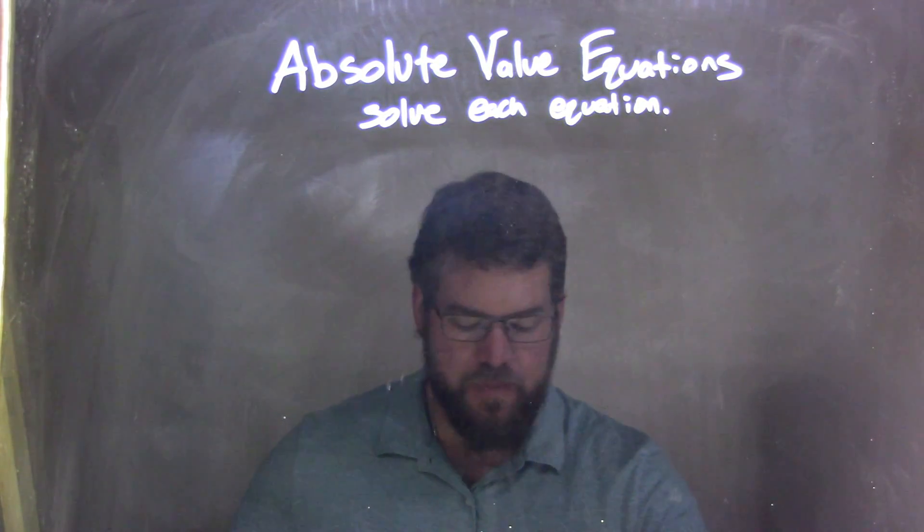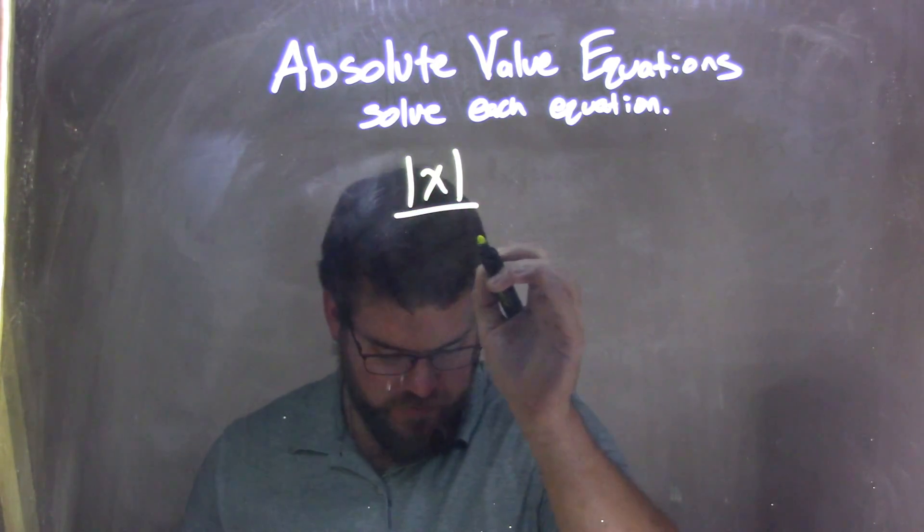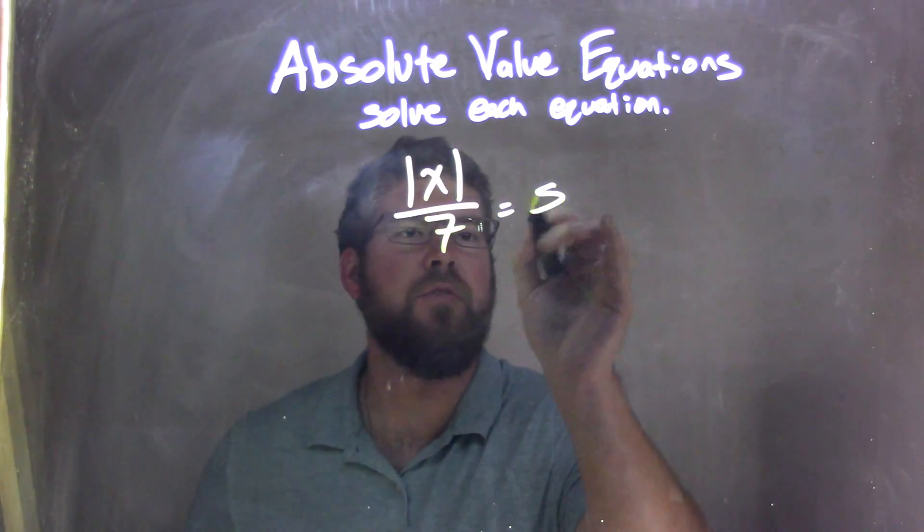If I was given this equation, absolute value of x over 7 equals 5.